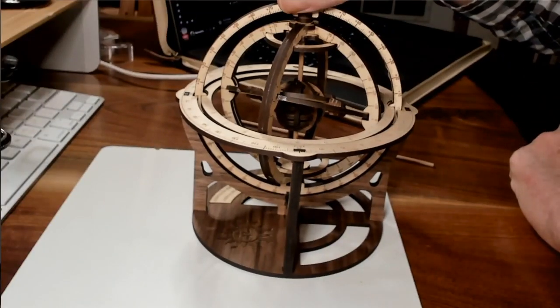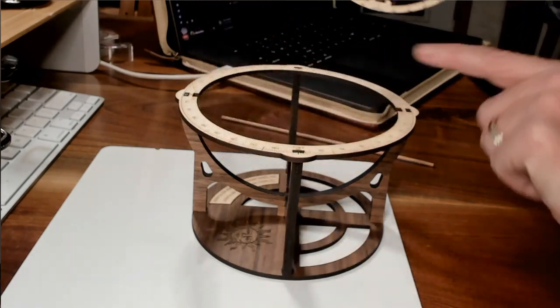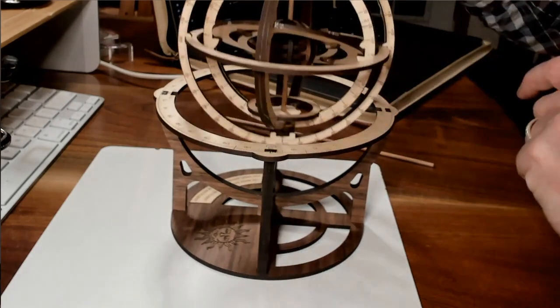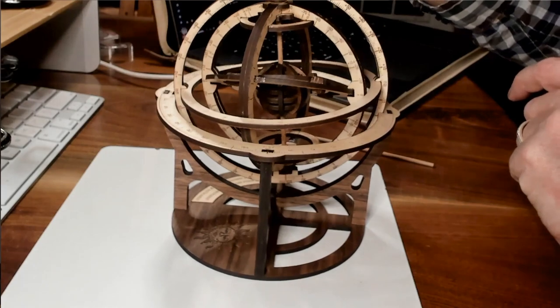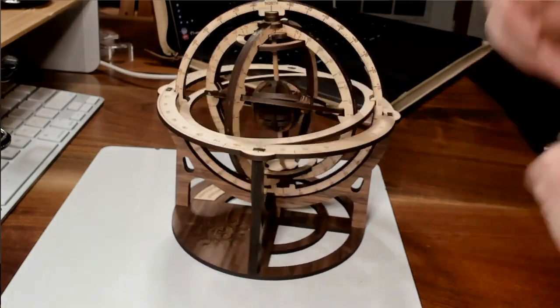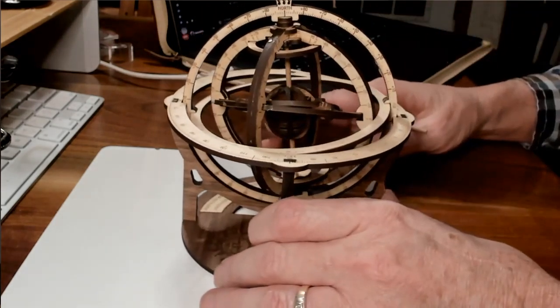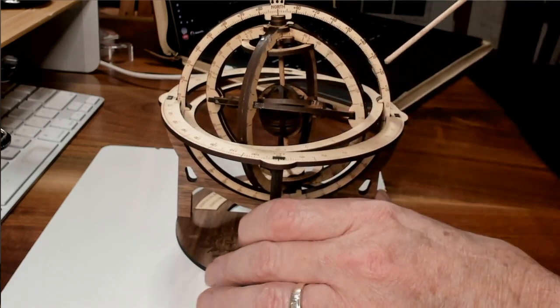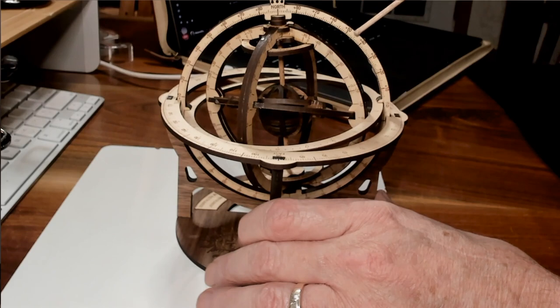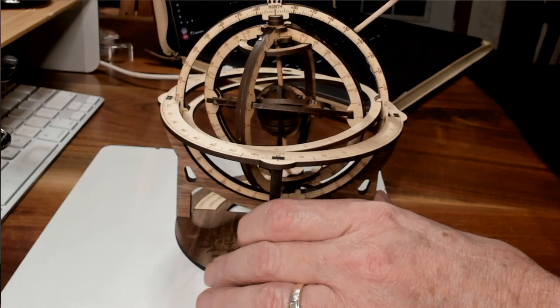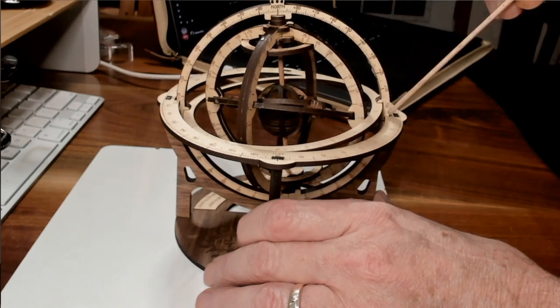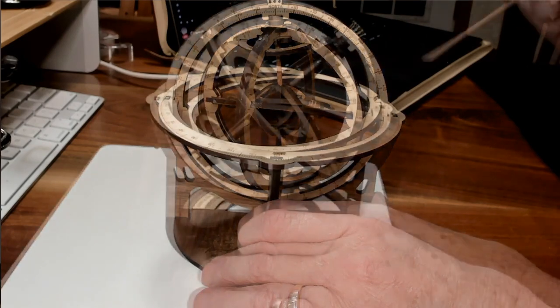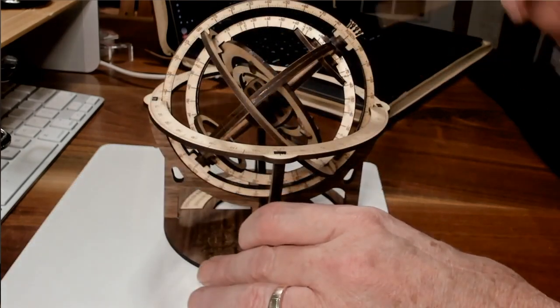Okay, so the armillary sphere consists of two different parts. The first part is the stand and the second part is the armillary sphere itself. Now to do the initial setup what we need to do is we need to find our latitude on the outer ring or the meridian ring of the armillary sphere. This is the meridian ring. So we'll tilt this to approximately 45 degrees.